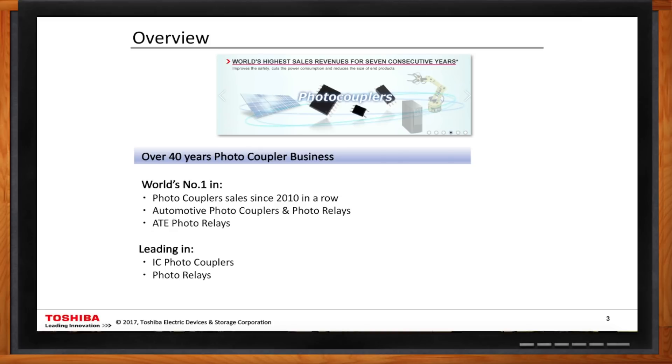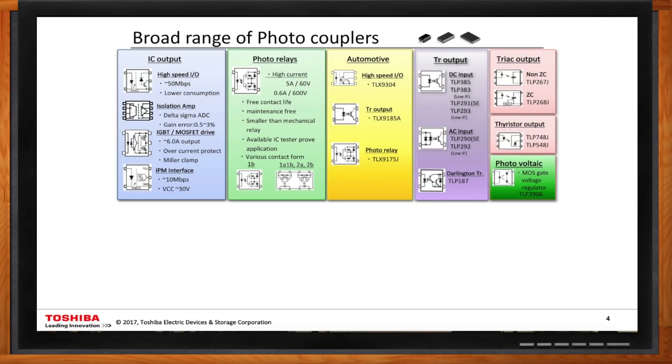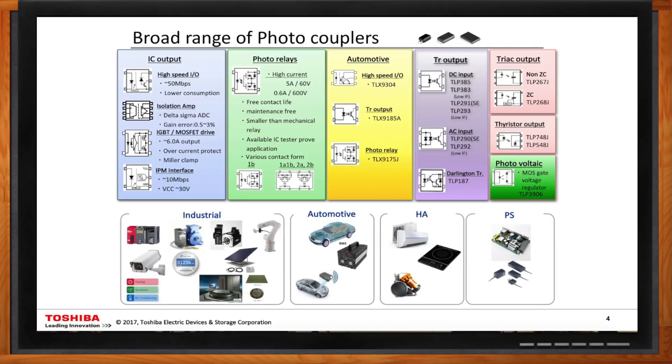Yeah, there are actually many types of photocouplers, and they are categorized, basically, depending on their output. On this particular slide, you can actually see the various types of photocouplers. The first one is what we call IC output couplers, IC output including high-speed I/O all the way up to 50 megabits per second. And we also have gate driver couplers, IGBT or MOSFET gate drive couplers. Also, including isolation amp. And all of those type of couplers, what Toshiba call IC output couplers. We also have, obviously, the transistor output coupler, both the DC and AC input, as well as the Darlington transistor type. From triad coupler to thyristor coupler. As you can see, Toshiba pretty much covers all type of photocouplers.